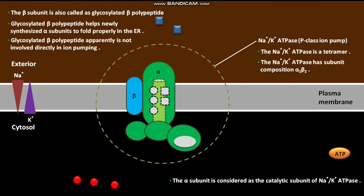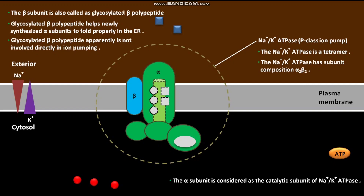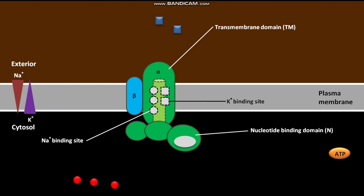The Na+/K+ ATPase alpha subunit is a single polypeptide chain having four domains. The first domain is the transmembrane domain (TM), which anchors the protein to the plasma membrane and contains three Na+ binding sites and two K+ binding sites. The second domain is the nucleotide binding domain (N), present in the cytosol, which functions as a kinase and has an ATP binding site.